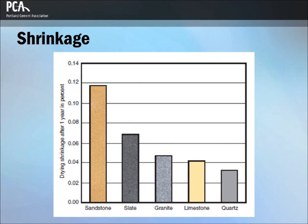Quartz and feldspar aggregates, along with limestone, dolomite, and granite, are considered low shrinkage aggregates, while aggregates with sandstone, shale, slate, hornblende, and graywacke are often associated with high shrinkage in concrete.